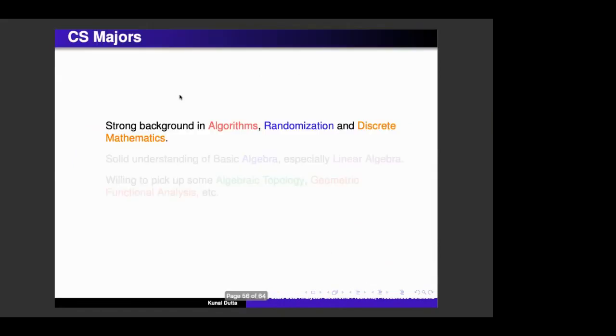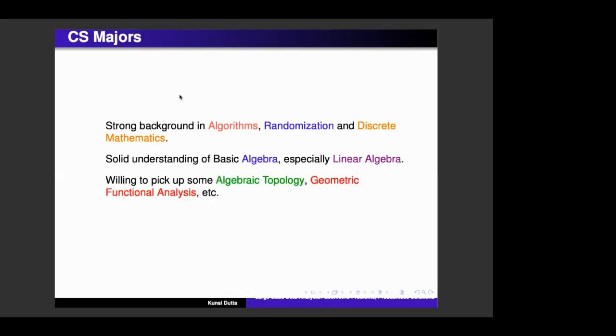So for the students, I would prefer to have, for CS majors, I would prefer a strong background in algorithms and probability and discrete mathematics, and also a good understanding of especially linear algebra and basic algebra. And they should be willing to pick up some algebraic topology, geometric functional analysis, and so on.